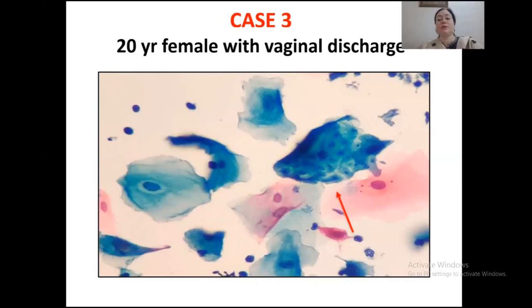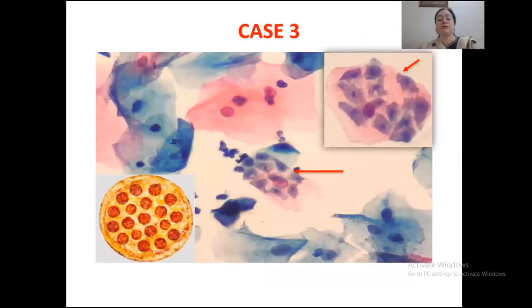Case three was a 20-year-old female with vaginal discharge. The organ is indicated by a red arrow. This is another picture of the same case, and the inset on the left side is again a clue to the diagnosis.